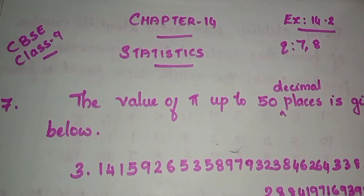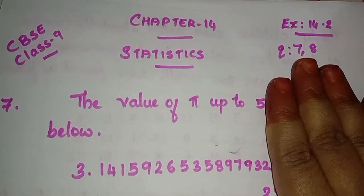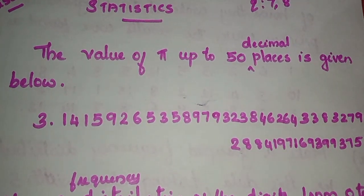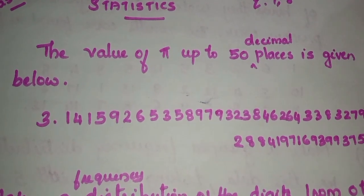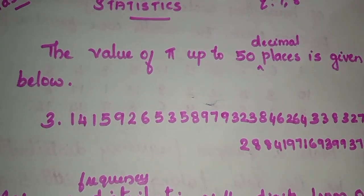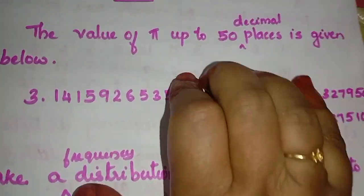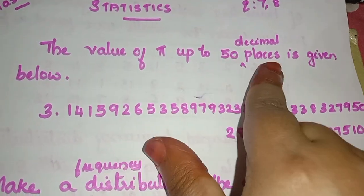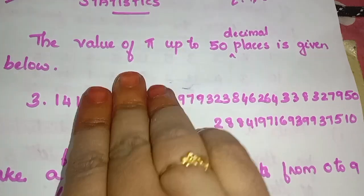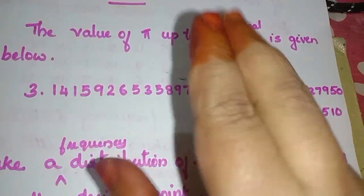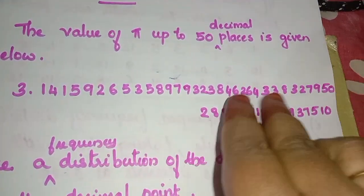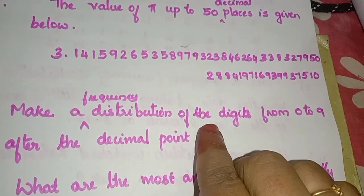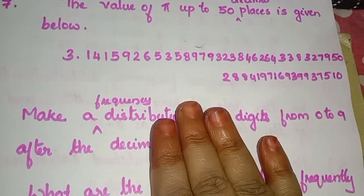We are going to discuss question number 7 and 8 in this class. The value of pi up to 50 decimal places is given below. We need to make a frequency distribution of the digits from 0 to 9 after the decimal point.